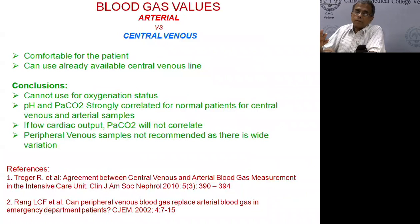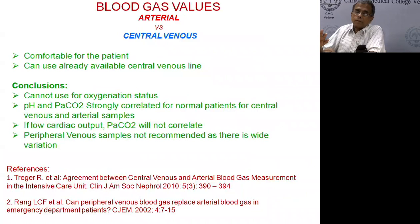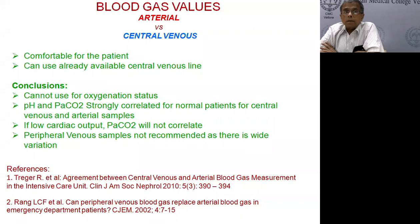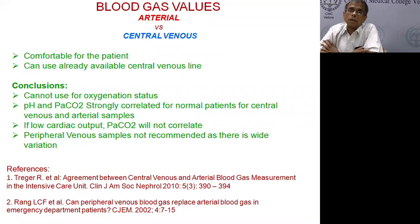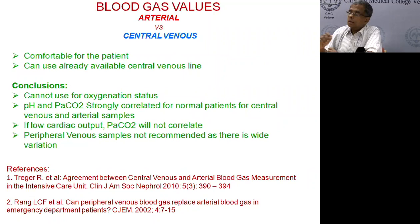Before proceeding, I want to clarify some confusion from the previous lecture. A peripheral venous blood sample is not adequate to evaluate the metabolic and respiratory status of a patient. A central venous sample has good correlation for carbon dioxide and pH, but not for oxygen. However, if cardiac output is low, the CO2 will show a big difference, so it is not useful in patients with low cardiac output.